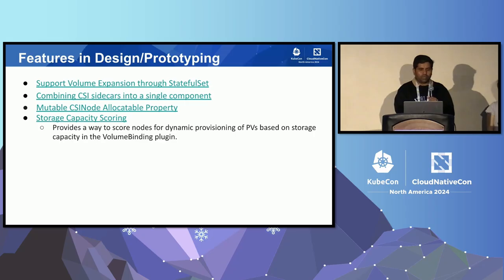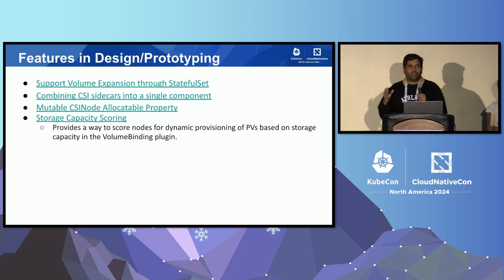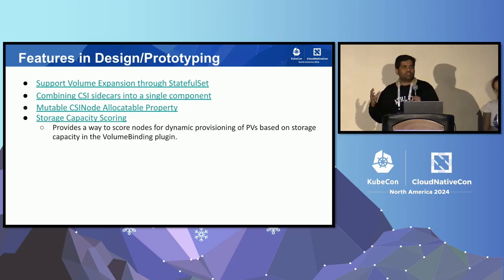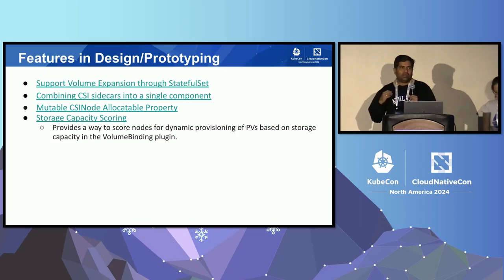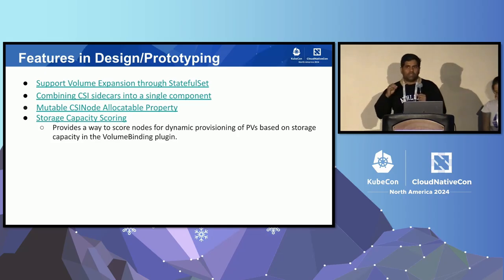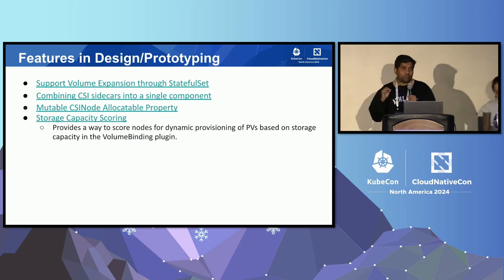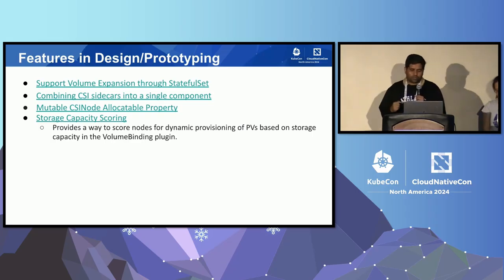Another feature we have been working on is combining various sidecars — like attacher, resizer, and provisioner — into a single sidecar. It's tedious to maintain all these different sidecars, bump them, fix CVEs, and so on. Merging them into one process will also allow us to reduce the CPU and memory footprint of all these sidecars, because they can use a shared informer.